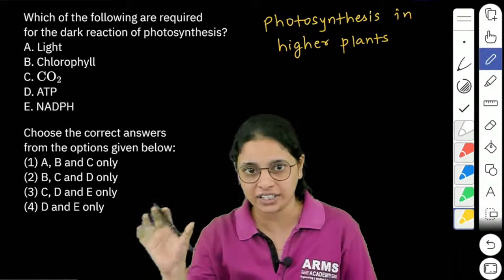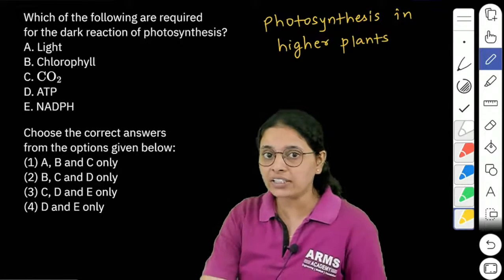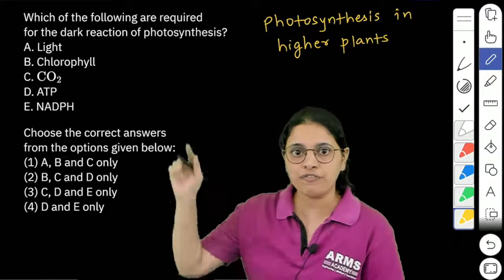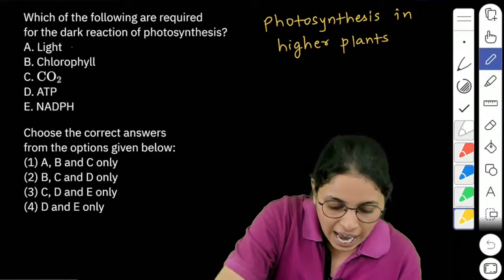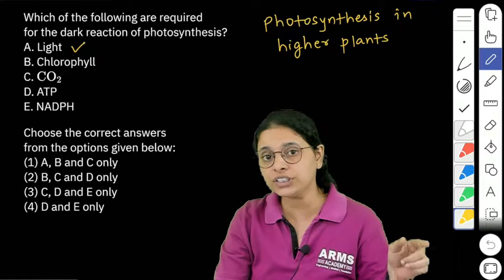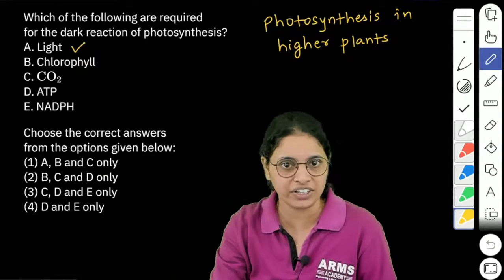light reactions and dark reactions. In the light reactions of photosynthesis, the first material that is light is directly involved. So it is used in the light reaction but not in the dark reactions.